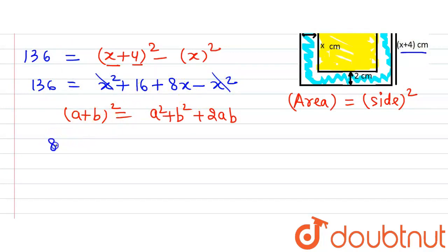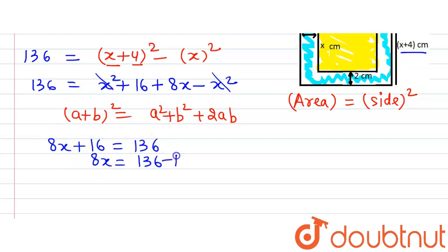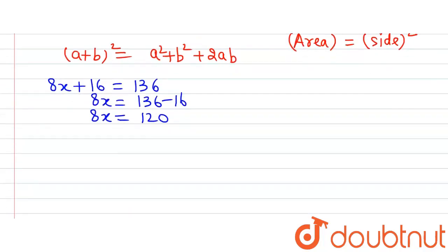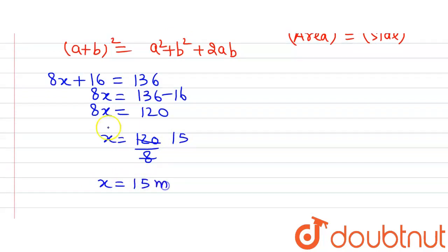The x² terms cancel out. So 8x + 16 equals 136. Moving 16 to the other side gives 136 minus 16, which is 120. So 8x equals 120. Simplifying, x equals 120 divided by 8, which gives us 15.